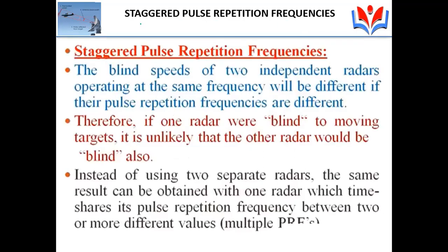The next topic is staggered pulse repetition frequencies. What is staggered? Two independent radars operating at the same frequency will have different blind speeds if their pulse repetition frequencies are different. Therefore, if one radar were blind to a moving target, it is unlikely the other radar would be blind also.